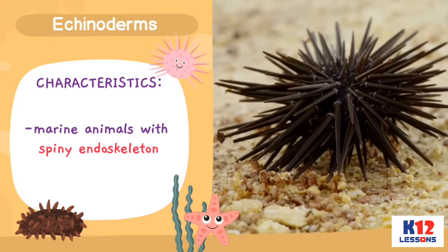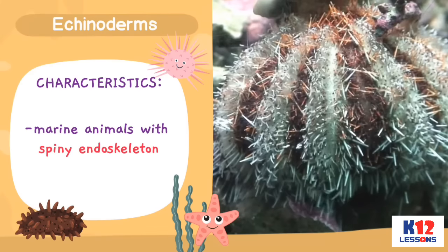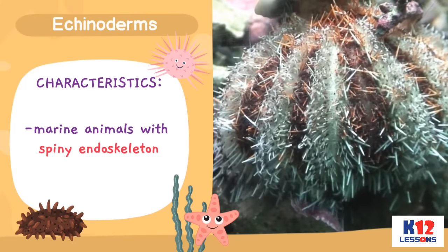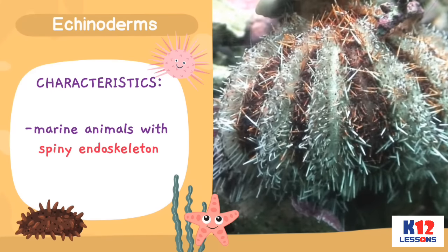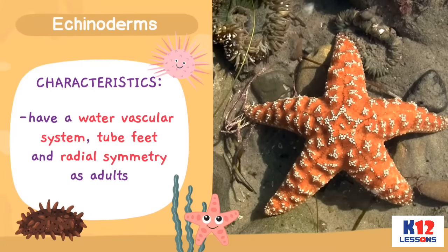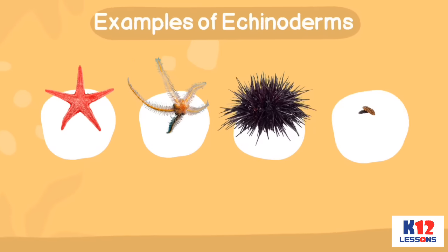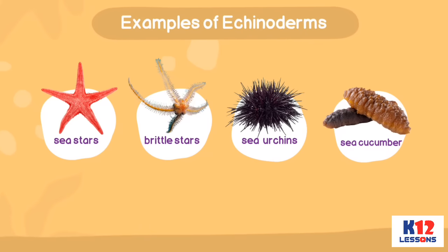Echinoderms: Echinoderms are marine animals with a spiny endoskeleton. They have a water vascular system, tube feet, and radial symmetry as adults. Examples of echinoderms: sea stars, brittle stars, sea urchins, and sea cucumber.